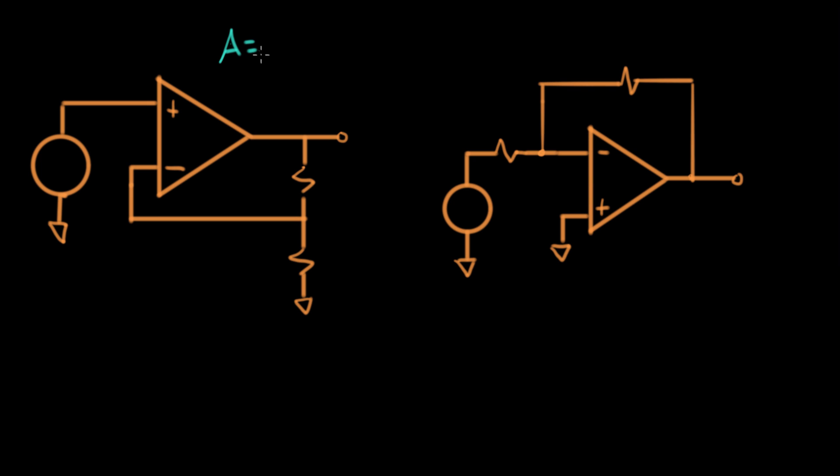Let's let the gain of our op amp be 10 to the third, or 10 to the sixth, really high gain, a million. And we're gonna let the output voltage here, Vout, is about, let's say, six volts.